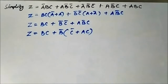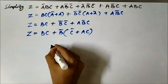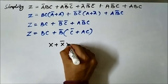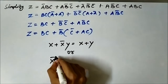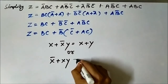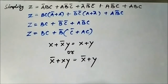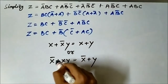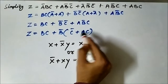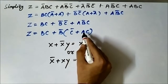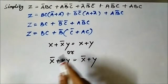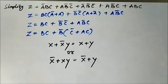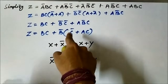Again, in the terms b̄·c̄ and a·b̄·c, b̄ is common. Taking b̄ as common gives b·c + b̄·(c̄ + a·c). Now we can apply the absorption rule, which states x̄ + x·y = x̄ + y. Applying this: c̄ + a·c simplifies to c̄ + a.